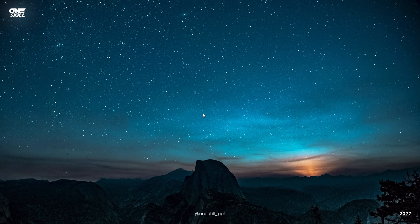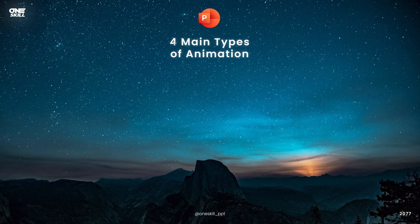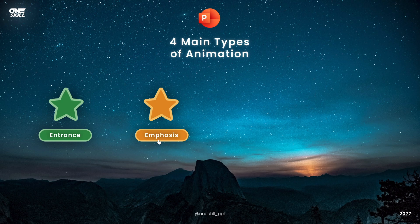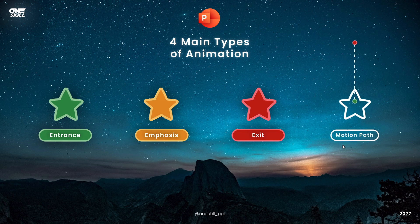Welcome to the first lesson where we will start with the four main types of animations in PowerPoint. Open up lesson one slides and let's go. We have entrance animations, emphasis animations, exit animations, and finally motion path animations. These are the four main types of animations that you can use in PowerPoint.